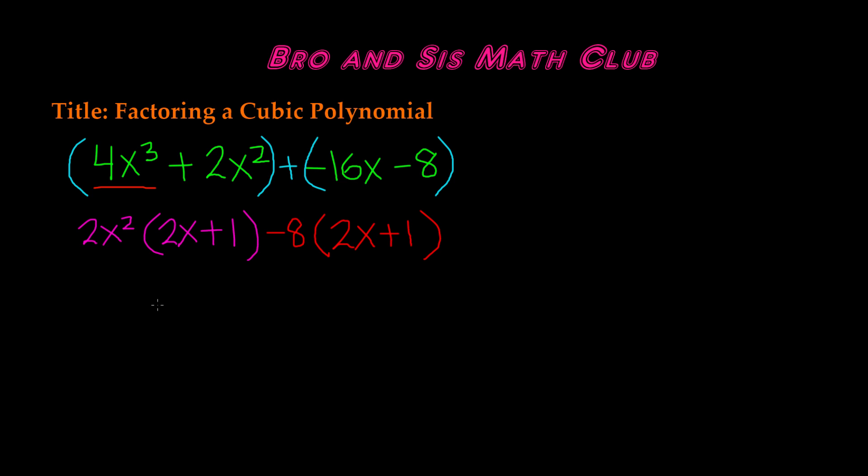So now what we need to do is write the 2x + 1 in one set of parentheses, and then we have to write the outer terms in another set of parentheses. So the outer terms are 2x² and -8. So we're going to write 2x² - 8.